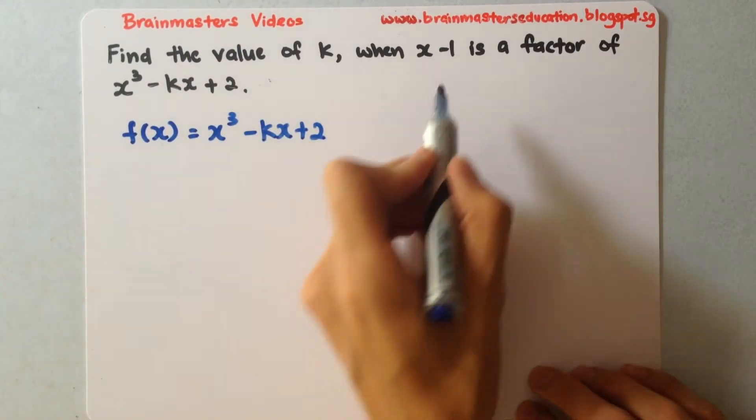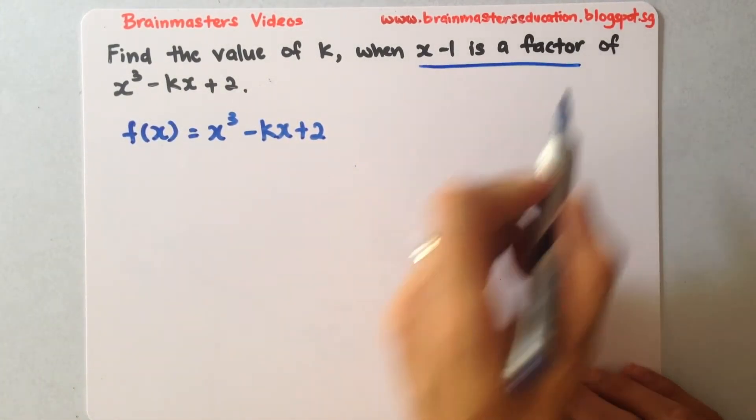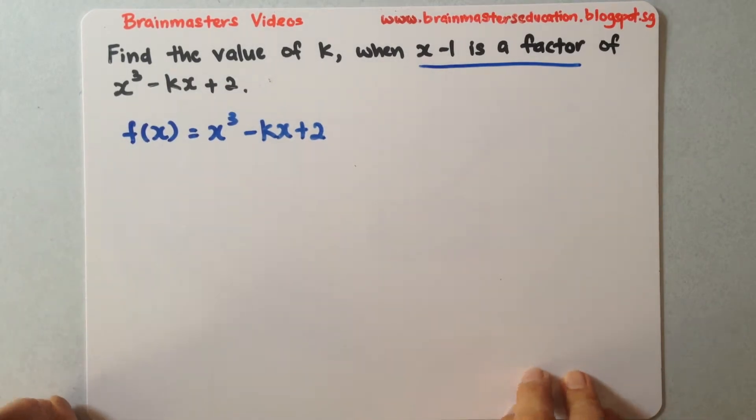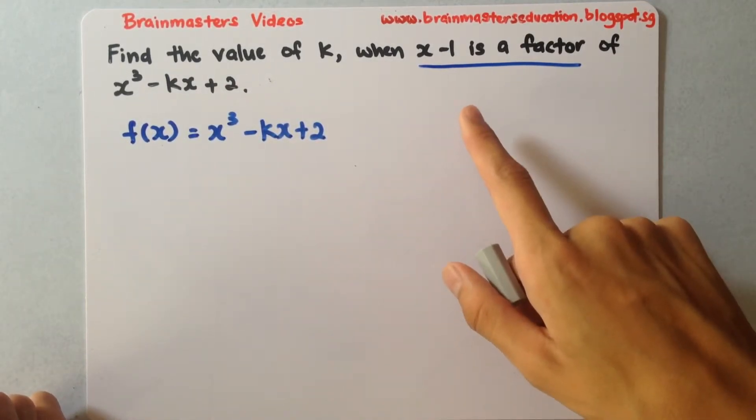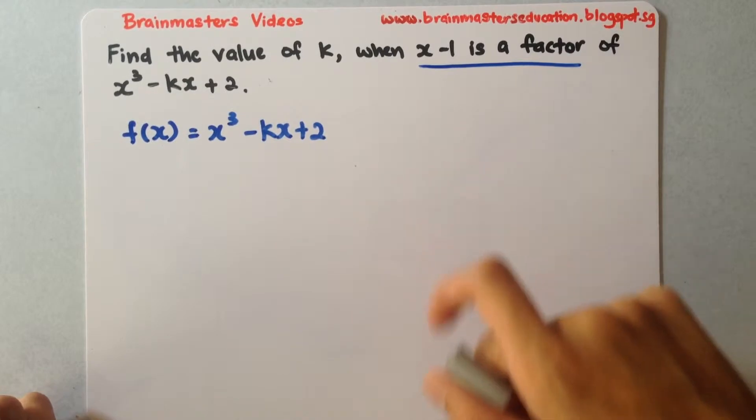Now, the next clue is here. They say that x minus 1 is a factor of this equation, meaning that when I use this equation divided by x minus 1, I will have a remainder of 0.